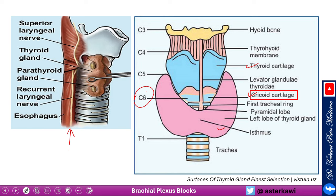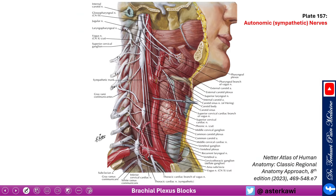The upper pole of the thyroid is roughly at C5, though this is variable. Pay attention to the autonomic system in the neck, mainly the sympathetic system. We have the superior cervical ganglion — a large ganglion with some implications for headache — the middle cervical ganglion, and our famous stellate ganglion, also called the cervicothoracic ganglion. All these ganglia lie in the fascial plane above the longus colli muscle — important to remember.